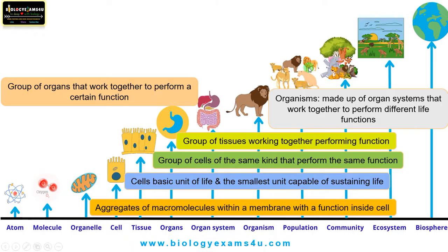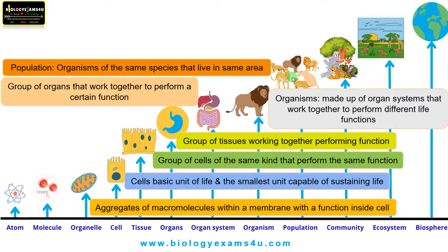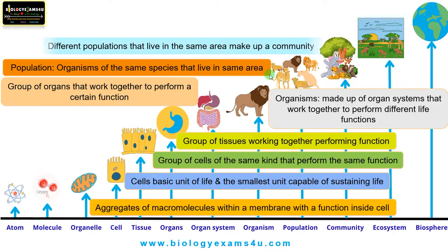Take the case of a pride of lions living in a particular area — that forms a population: organisms of the same species living in the same area. Then a group of populations — the lion population, the zebra population, the hyena population — all together, a group of populations that interact with each other or live in the same area, makes up a community.